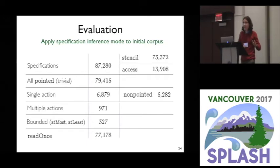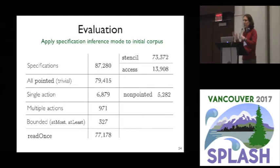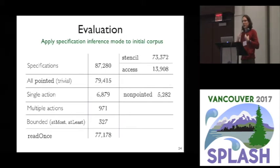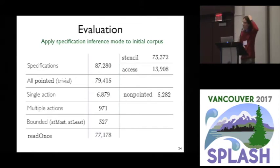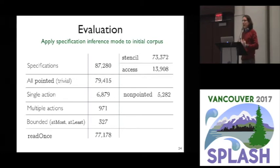It's worth pointing out that our verification tool is not a push-button tool where you put your code in and it says 'oh, there's a bug here.' You have to provide specifications because you have to describe your intent as a programmer and ask whether the code matches that intent. So we thought: how can we generate some data about how useful this is for catching real bugs?